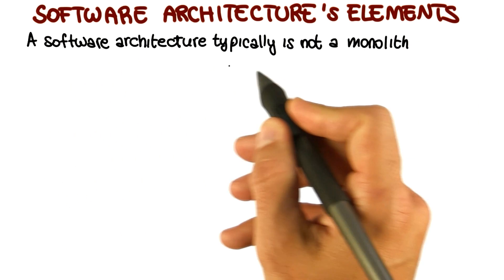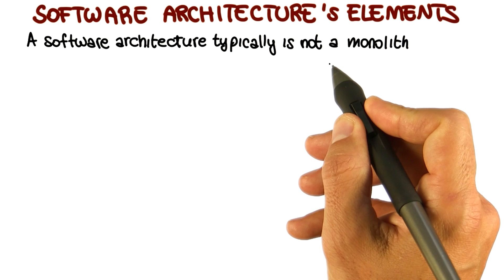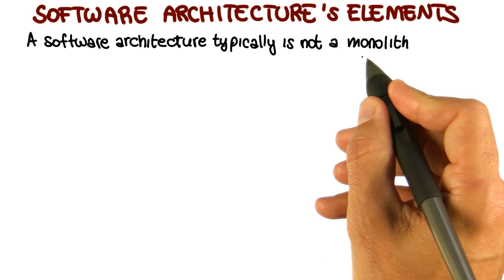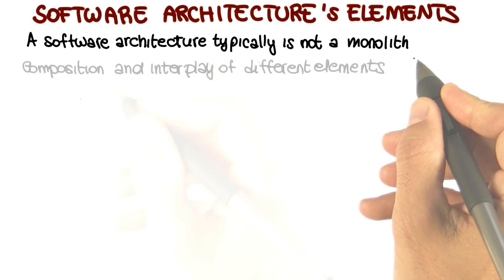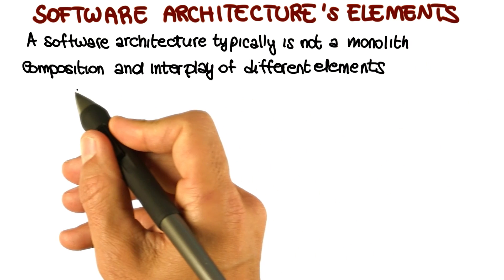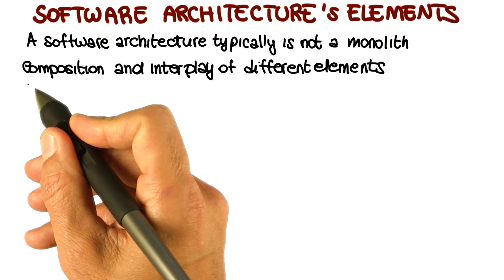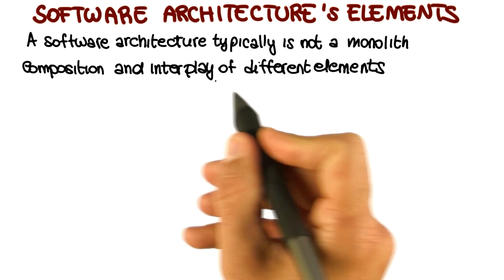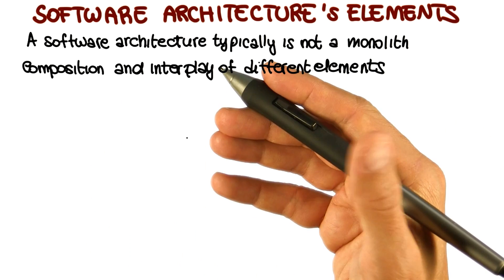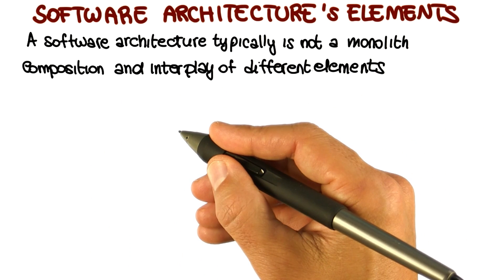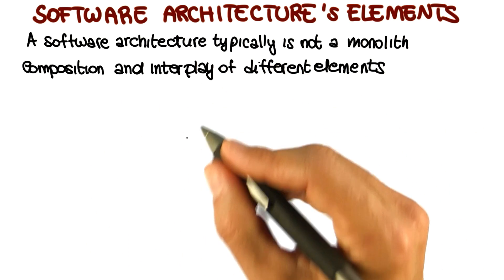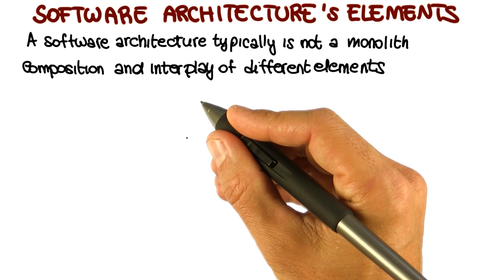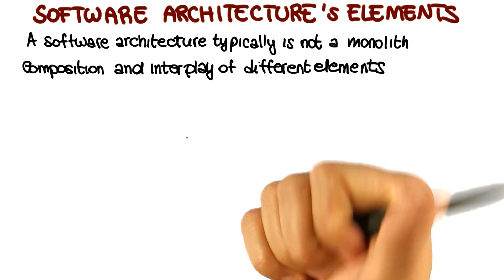A software system's architecture typically is not and should not be a uniform monolith. On the contrary, an architecture should be a composition and interplay of different elements. In particular, as we quickly mentioned at the beginning of the lesson, there are three main types of elements in an architecture.